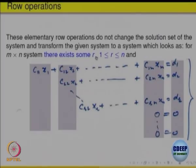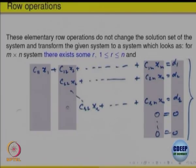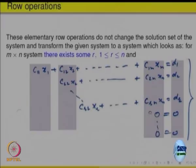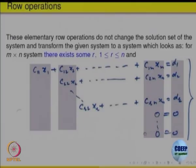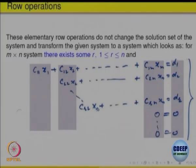There is a number r, where r is less than or equal to the number of variables n. The first r equations possibly have non-zero coefficients c_i's, and on the right-hand side these are possibly non-zero. But after the (r+1)th equation, everything is 0 = 0. So we have reduced the number of equations required to find a solution to r equations, and the remaining (m−r) equations are all 0 = 0. This is the method suggested by Gauss.